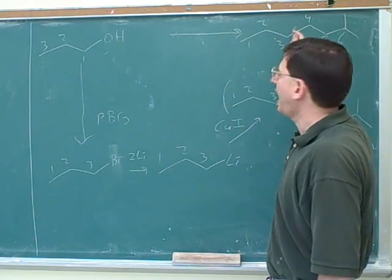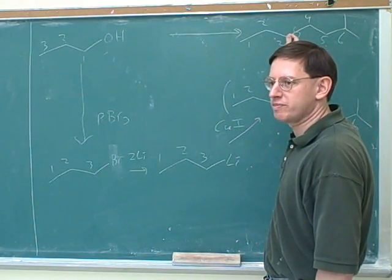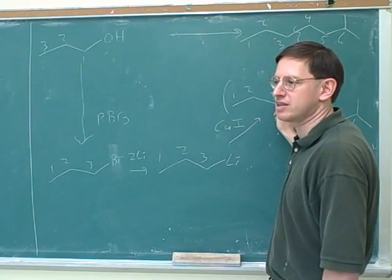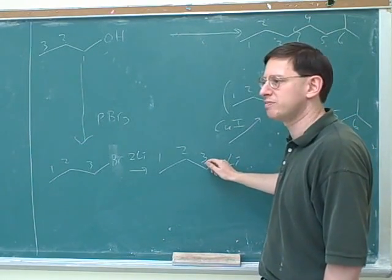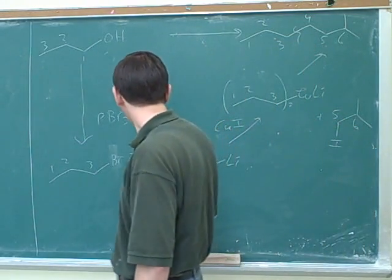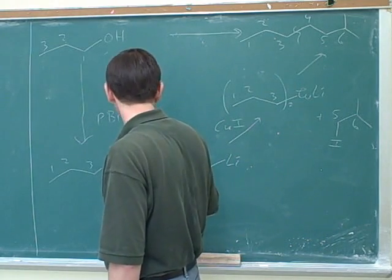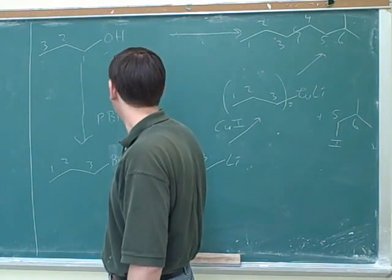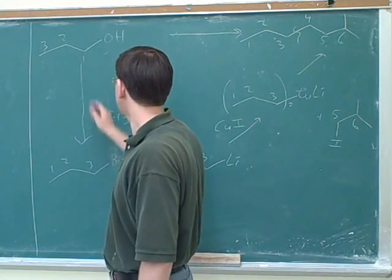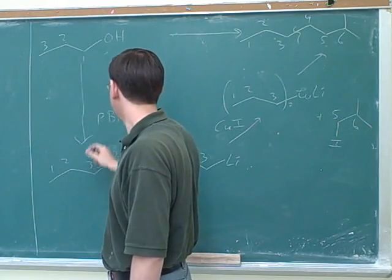Because there's a million things you could do to this starting material, so it's fruitless to just go through all the different things you could do to this. Instead, you want to look at the product and ask, how could I make this product? Because there's only one way to make this product. And then you can ask, how can I make this intermediate? And there's only one way to make that intermediate. And now we know the best way to turn a primary alcohol into this is like this.